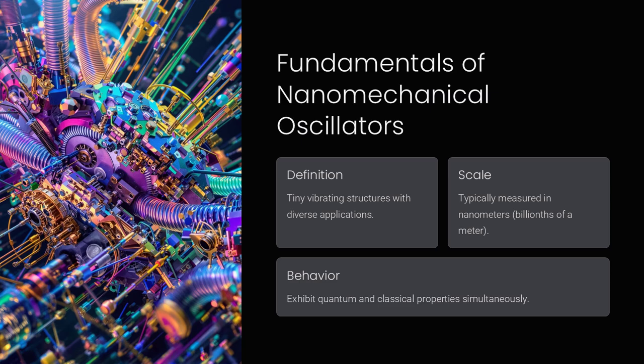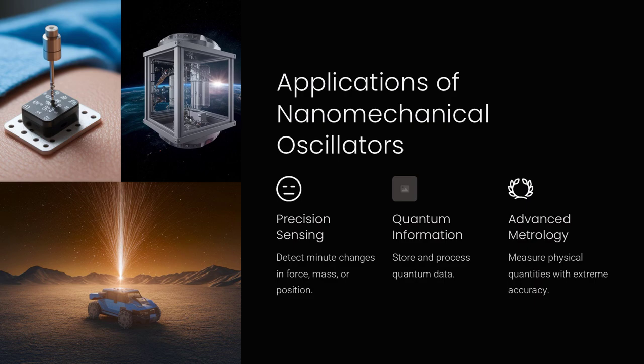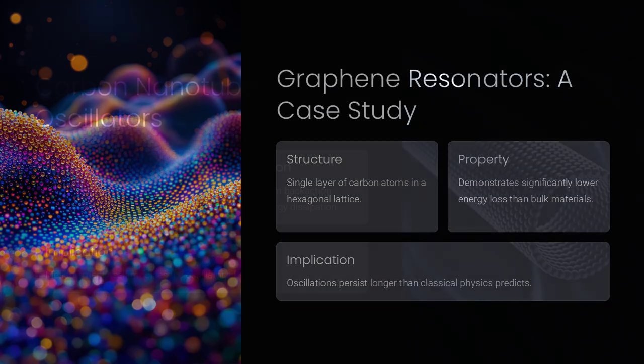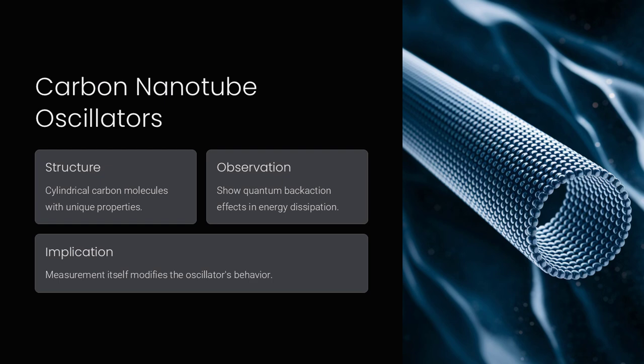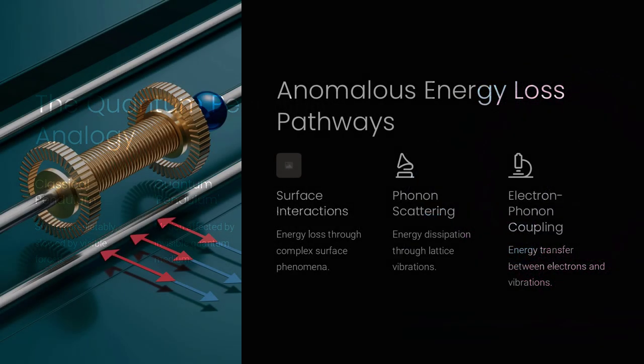Casimir effects and even quantum zero-point fluctuations can play dominant roles in how energy dissipates, or doesn't. Some experiments suggest that quantum effects can even create regions of negative damping, where energy is unexpectedly sustained rather than lost. Could this be harnessed for ultra-efficient energy storage or quantum computing applications?